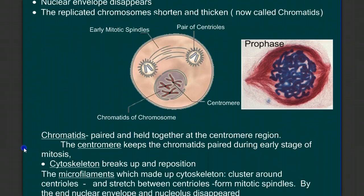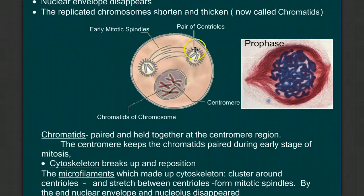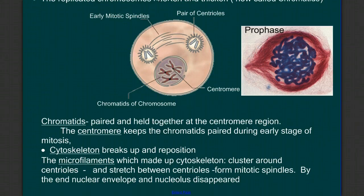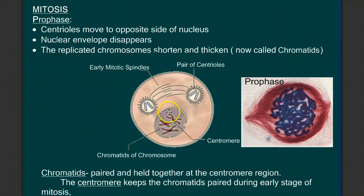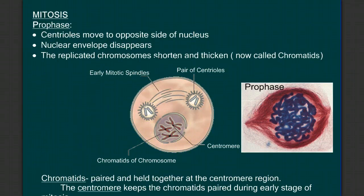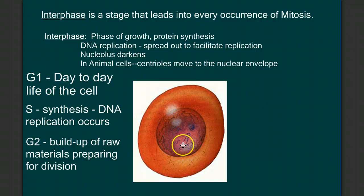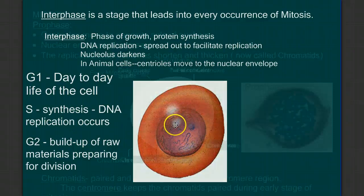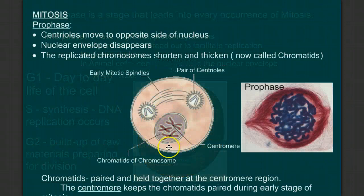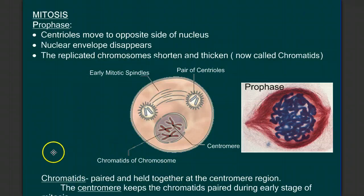We can see the mitotic spindle beginning to form — these protein fibers which will direct the chromosomes during this process. The cytoskeleton elements are going to break down, allowing the cell to change shape. The thickening and shortening of the chromosomes will make them easier to move around and separate. If we look at the chromatin — these long thin threads, fibers of DNA — trying to separate all those little threads would easily become difficult to untangle. So during prophase, those chromosomes shorten and thicken into structures that are much easier to move about.